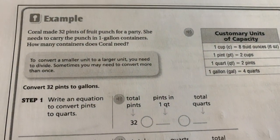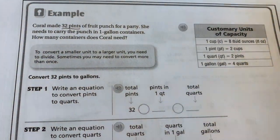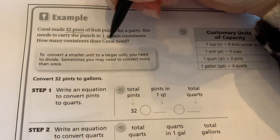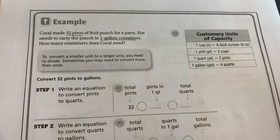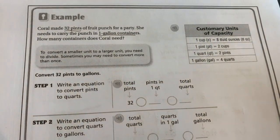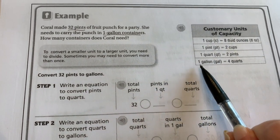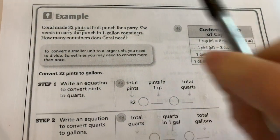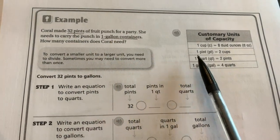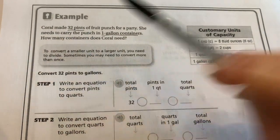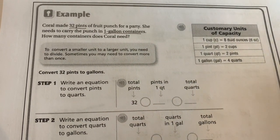Coral made 32 pints of fruit punch for a party and needs to carry it in one-gallon containers. How many containers does she need? Looking at the chart, there's no direct conversion from pints to gallons, so we're going to have to convert pints into quarts first, and then quarts into gallons.